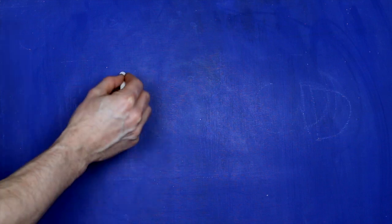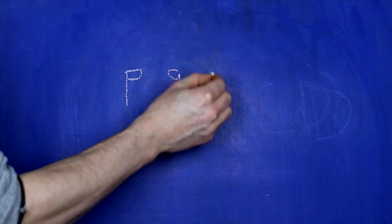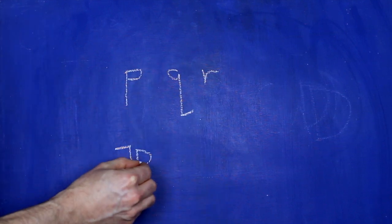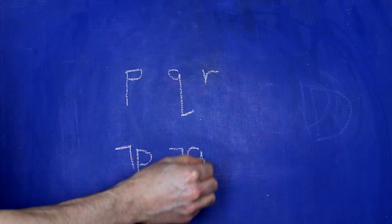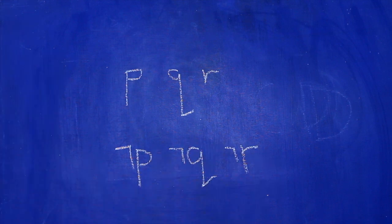A literal is either a primitive sentence or a primitive sentence with one negation in front of it. So p, q, r, not p, not q, not r — these are all literals.